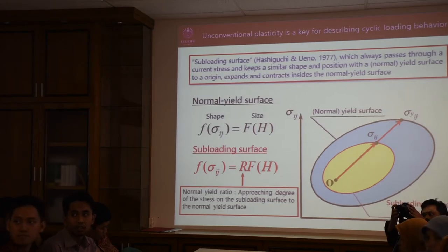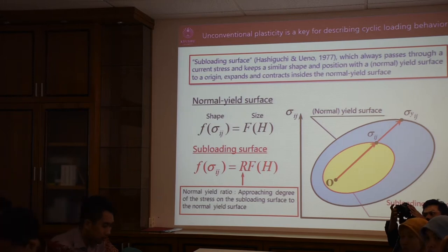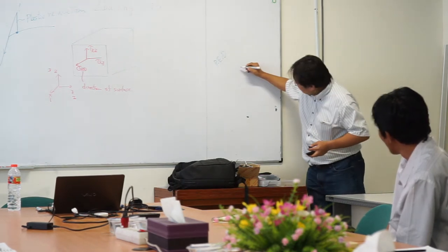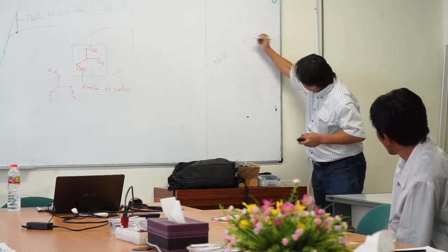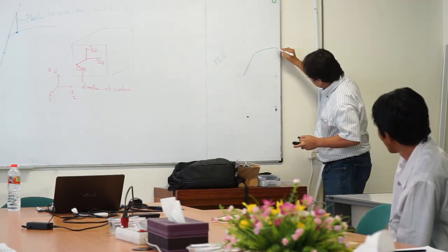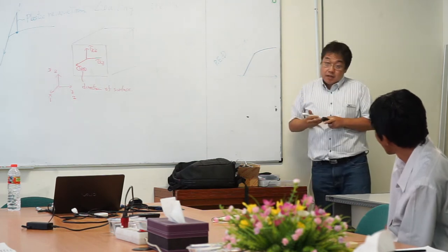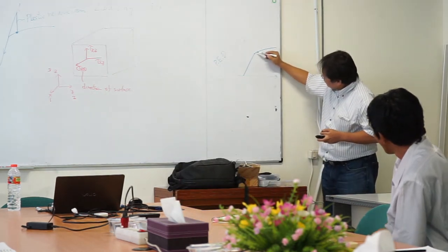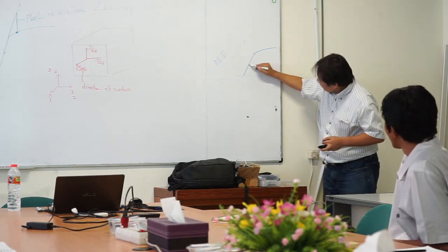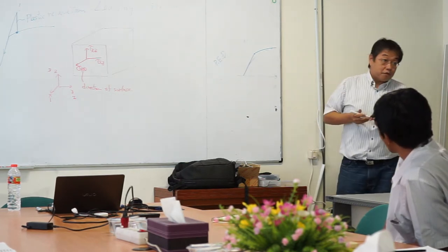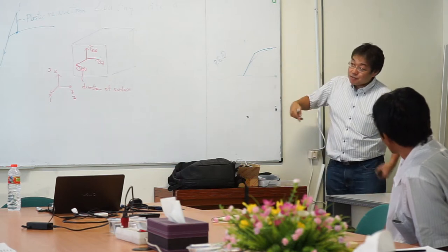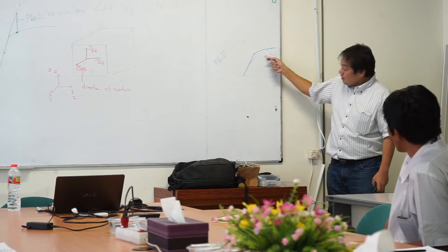Inside our yield surface is a purely elastic domain. Plastic domain does not occur inside the yield surface, so the deformation profile is described like that. This model makes it very difficult to describe such kind of smooth deformation from the elastic part to the plastic part.